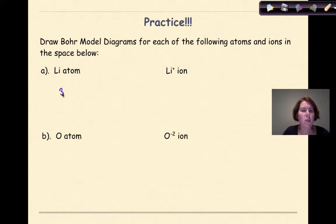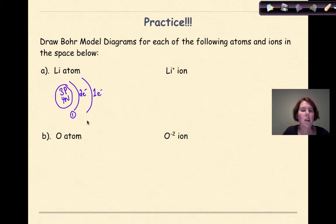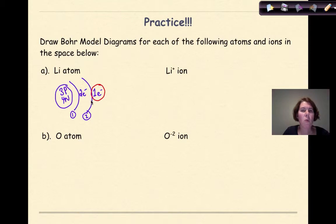For a lithium atom: 3 protons and 4 neutrons in the nucleus. Since it's an atom with 3 protons, I have 2 electrons in the first shell and 1 electron in the second shell — because 2 + 1 = 3, and for an atom, electrons equal protons. The second shell is my valence shell, so lithium has 1 valence electron.